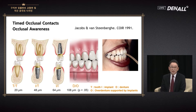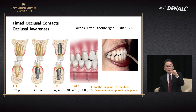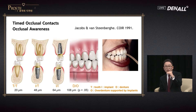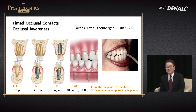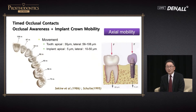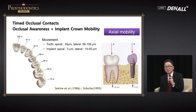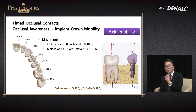Natural tooth to natural tooth: 20 microns — very thin things can be recognized. There is a wide variety of the level of perception depending on natural teeth versus implants. As we know, natural teeth are mobile. Implants move very little — they have very small lateral or axial movements. Timed occlusal movements is composed of occlusal awareness and implant crown mobility.